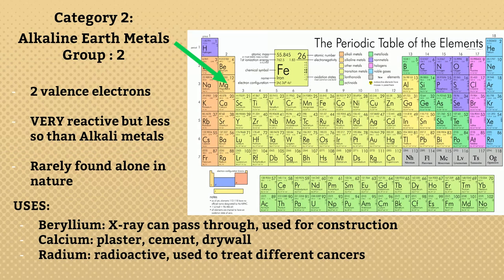Category 2: they are alkaline earth metals, belonging to group 2. They have 2 electrons in the outermost shell, so their valence is 2. They are very reactive but less than alkali metals, and are rarely found alone in nature. Beryllium is used in X-ray machines since X-rays can pass through it. Calcium is used in plaster, cement, and drywall. Radium is a radioactive element used to treat different cancers.